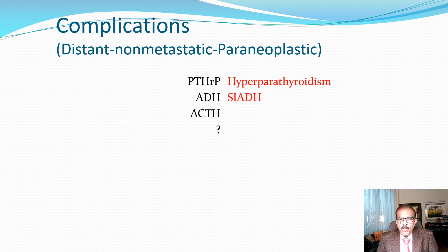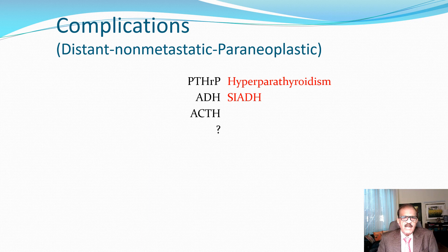Antidiuretic hormone may also be elevated, and if that is the case, the patient will develop syndrome of inappropriate ADH secretion (SIADH). Too much ADH causes too much water retention, leading to hyponatremia and hypoosmolality. The patient also has relatively concentrated urine — testing reveals the urine is rich in sodium. That is how the patient develops hyponatremia.